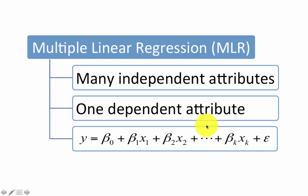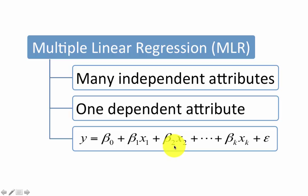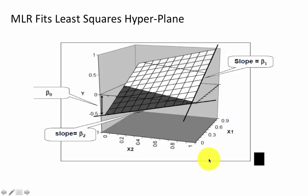Multiple linear regression has all the characteristics we just discussed. The only difference is that instead of one predictor attribute, you have many predictor attributes. Otherwise, we are doing exactly the same thing, following the least squares criterion. But in this case, instead of plotting the least squares line, you are actually fitting a least squares plane in multiple linear regression.